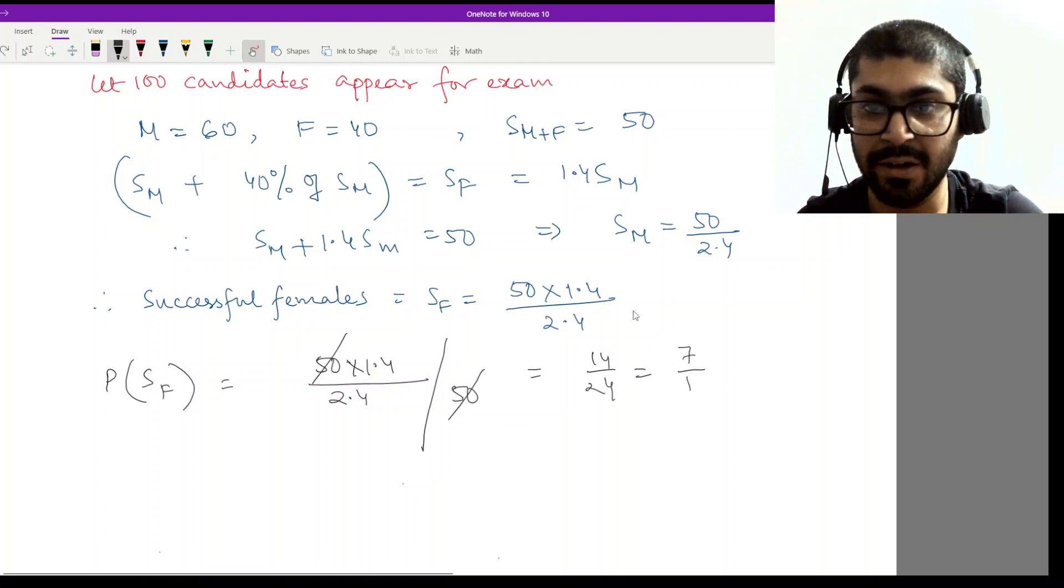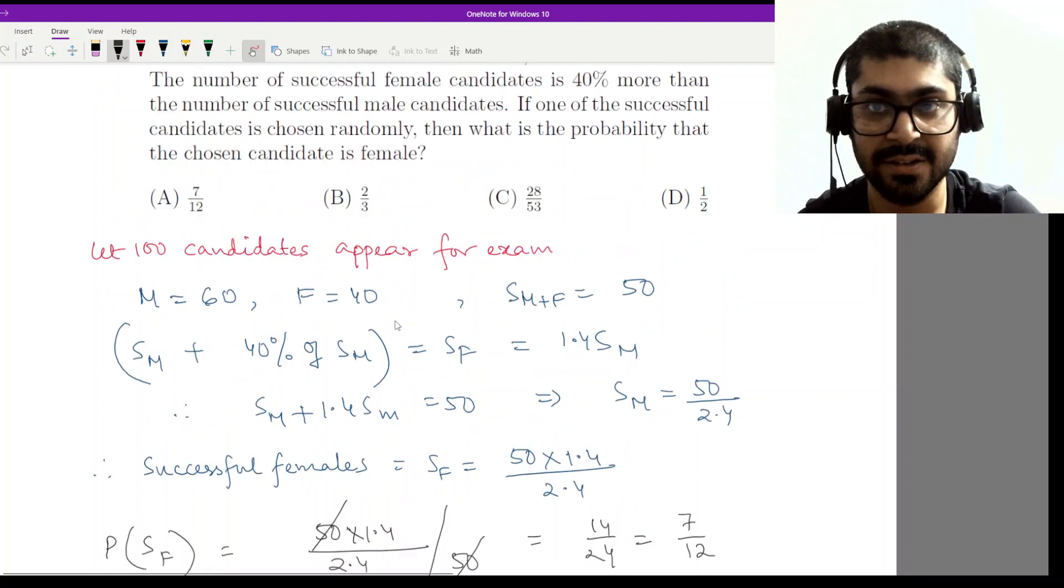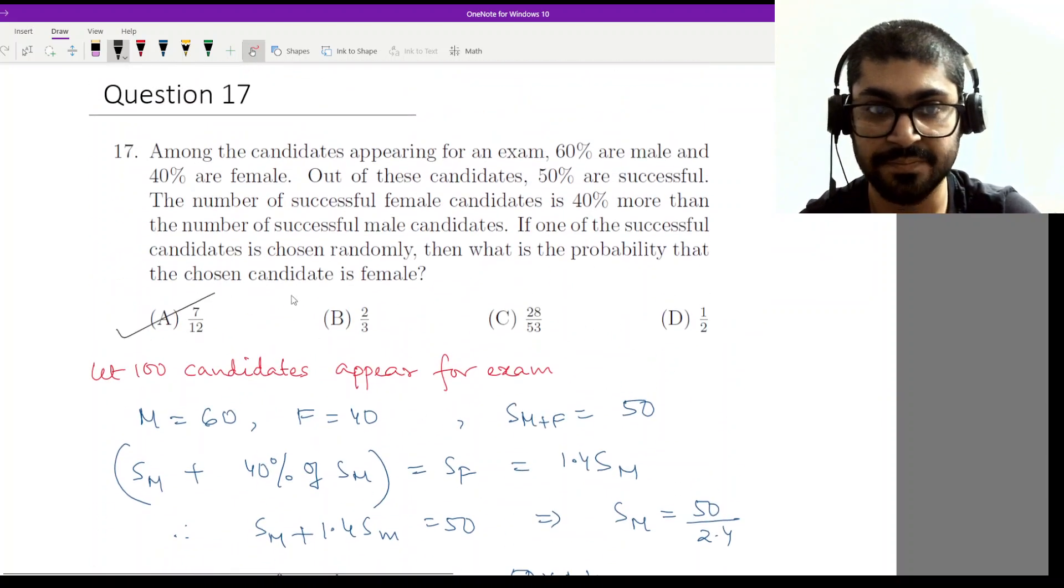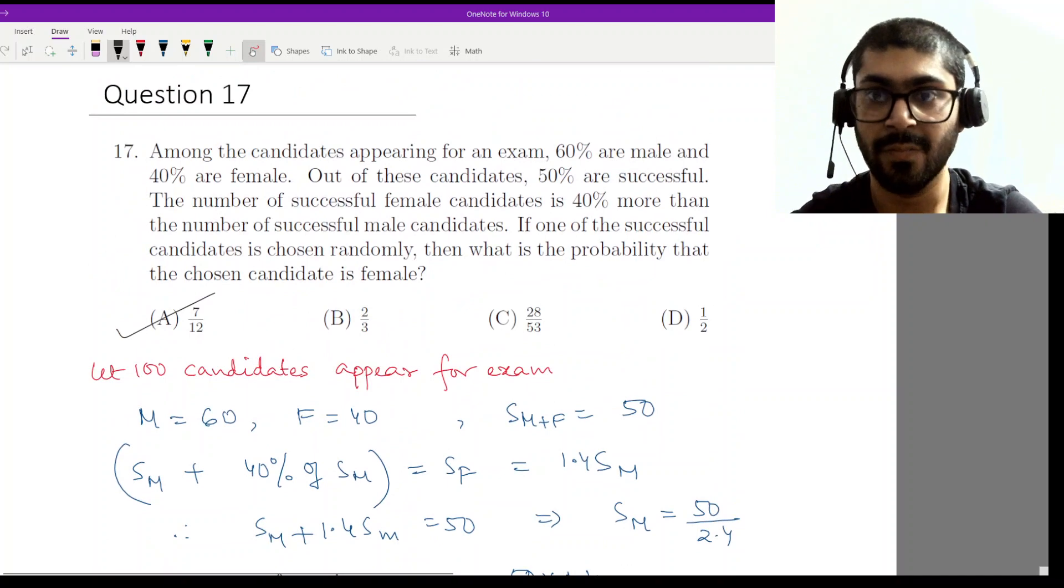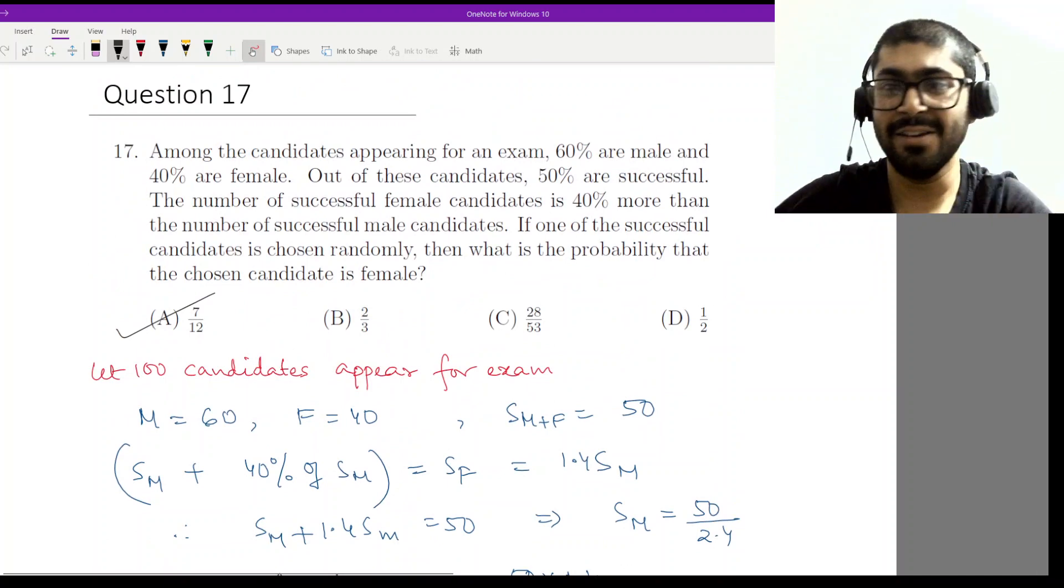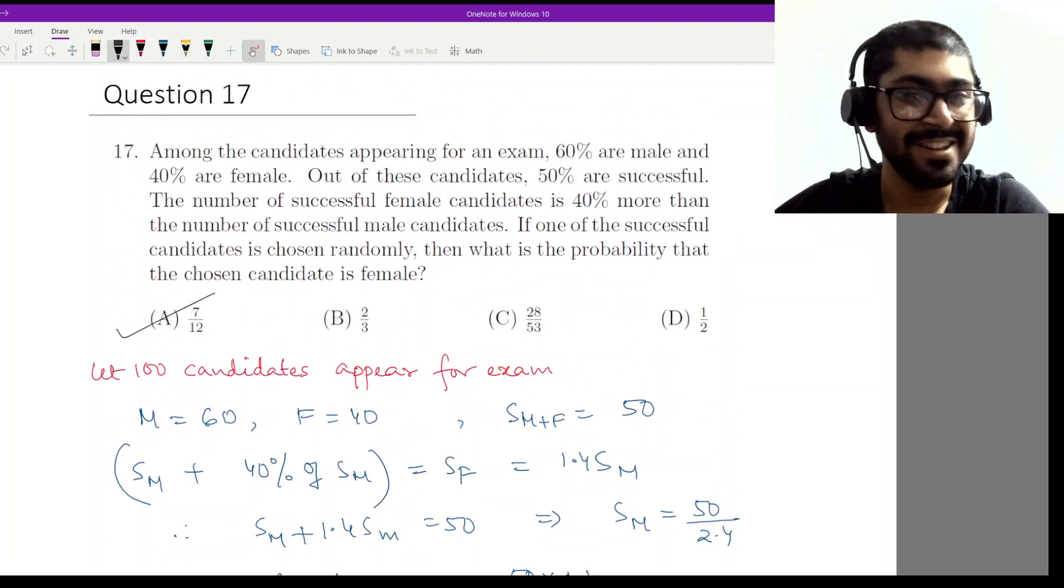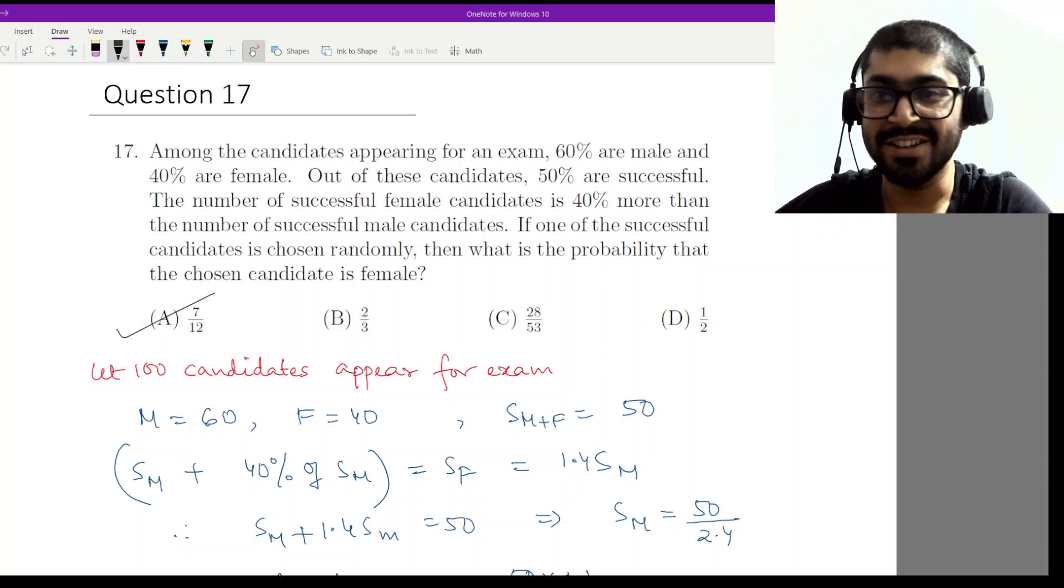So again, this sum was unusually quite easy. This could have been solved by any student with a knowledge of probability and percentages up till class 10.